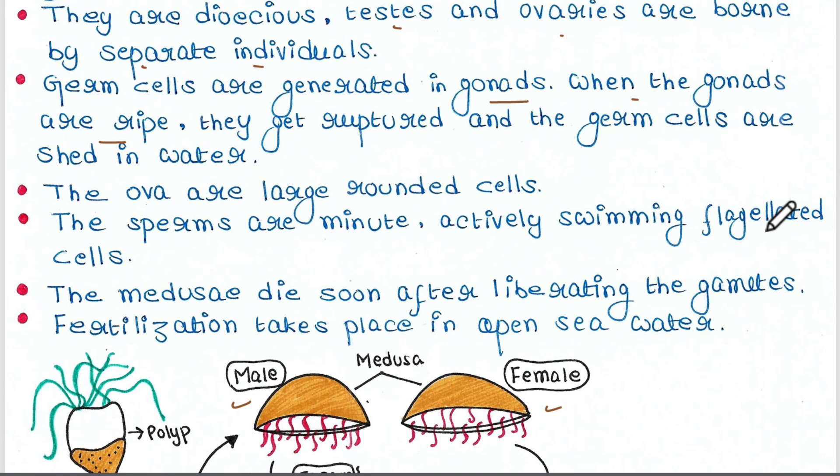Germ cells are generated in the gonads. When the gonads are ripe, they get ruptured and the germ cells are shed in water. The male Medusa have male gonads and the female have female gonads. The gonads form the germ cells — gametes — that means sperms and eggs. When the gonads get ruptured, these germ cells come out into the water.